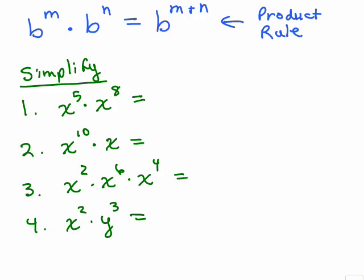Let's look at these four problems. X to the fifth times X to the eighth. Now, it's true that if you forget the product rule, you could simply write out 5 X's, 8 more X's, count them all up and you get 13, or you could simply add the exponents.